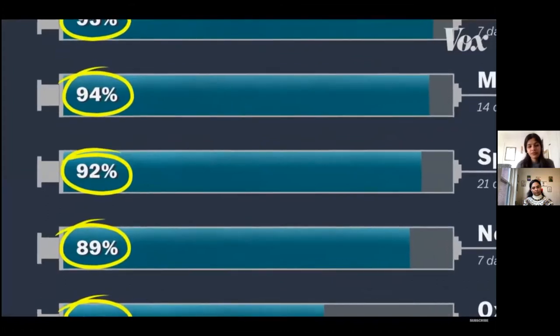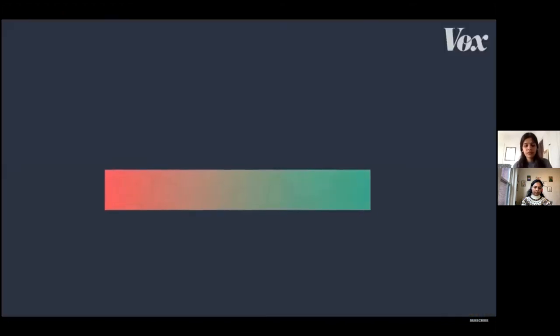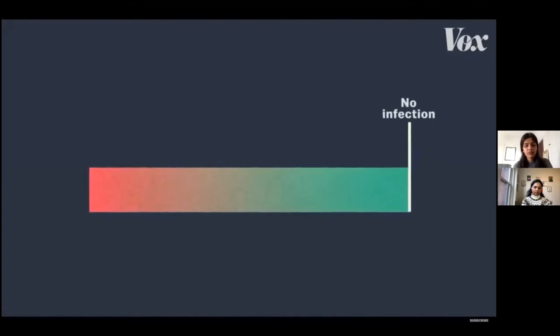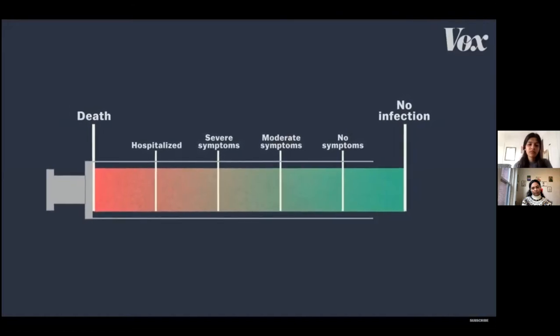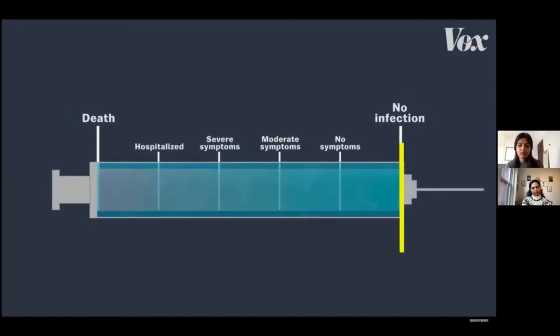Many experts argue efficacy isn't even the best number to judge a vaccine by, because preventing any infection at all is not always the point. The goal of a vaccine program for COVID-19 is not necessarily to get to COVID zero, but to tame the virus — to remove its ability to cause serious disease, hospitalization, and death. It helps to look at the different outcomes of exposure to COVID-19, from not getting sick at all, to no symptoms, to moderate symptoms, to hospitalization.